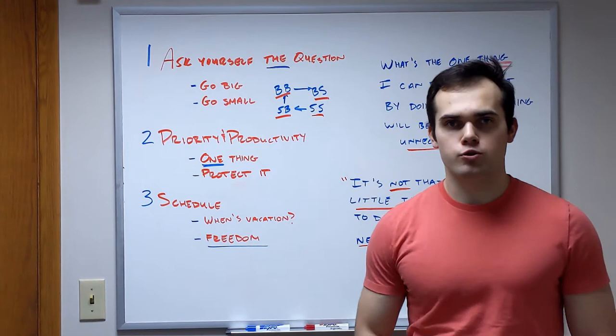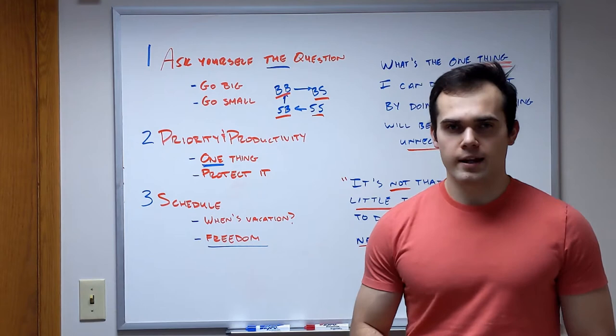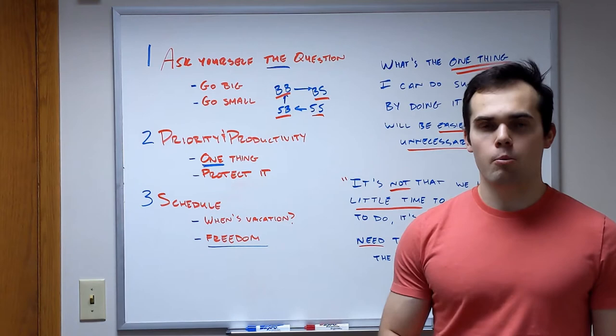Second key point is priority and productivity. Now that you have the one thing, you have to hold yourself accountable to it. That one thing is your priority. Keller goes on a little bit of a rant in the book. He says that there's no such thing as priorities.